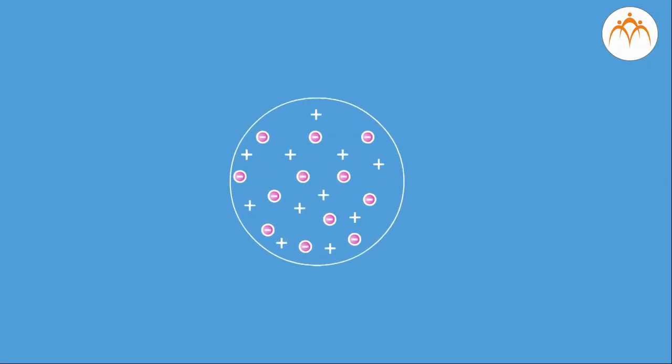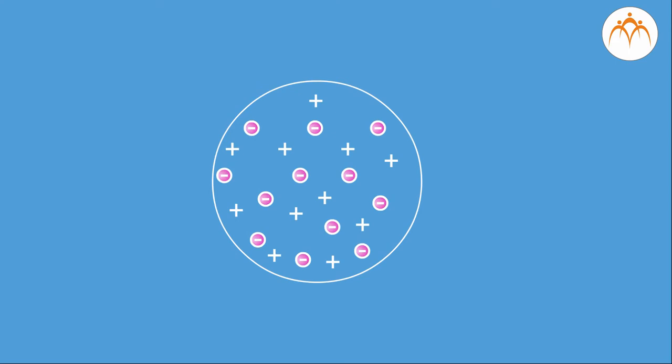On the basis of Thomson's Plum Pudding model, to verify the internal structure, Rutherford designed an experiment which is famous as Rutherford's Gold Foil Scattering Experiment.